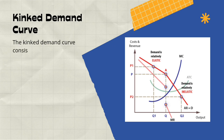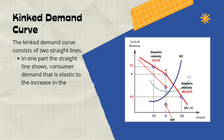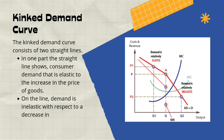This is the kinked demand curve. As you can see, the kinked demand curve consists of two straight lines. One part of the straight line shows that consumers' demand is elastic to increases in the price of goods. Thus, when the price of a good increases, the quantity demanded will fall at a higher percentage. For example, if the price increases by 15%, the quantity demanded will decrease by more than 15%.